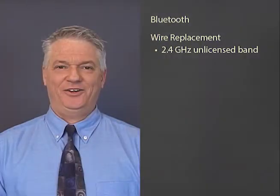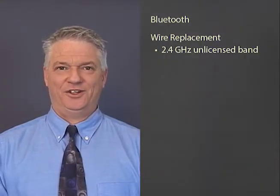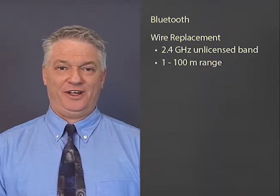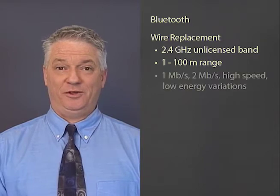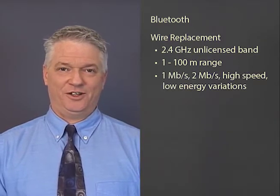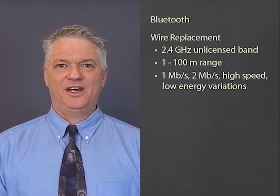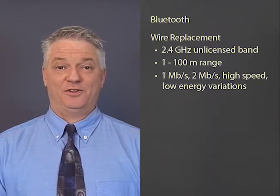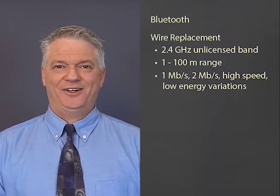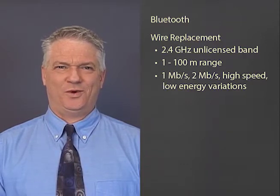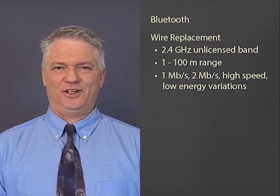Bluetooth is a radio technology that runs in the 2.4 GHz unlicensed band. There are standards for communications between 1 meter and 10 meters, and there are variations that run at 1 megabit per second, which was 700 kilobits per second in practice, and then 3 megabits per second, which was 2 megabits per second in practice.